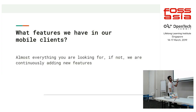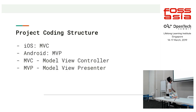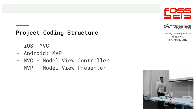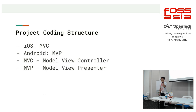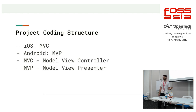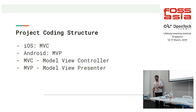Looking at the mobile client features and project coding structure: for iOS we are using MVC — model view controller — and for Android we are using MVP — model view presenter. Both iOS and Android are native applications; we are using native development. The iOS project is written in Swift and the Android one is in Kotlin.